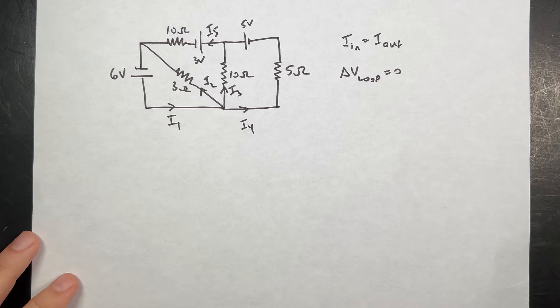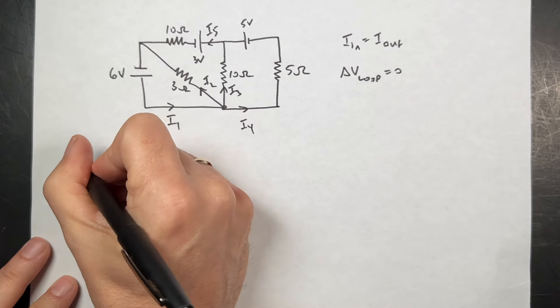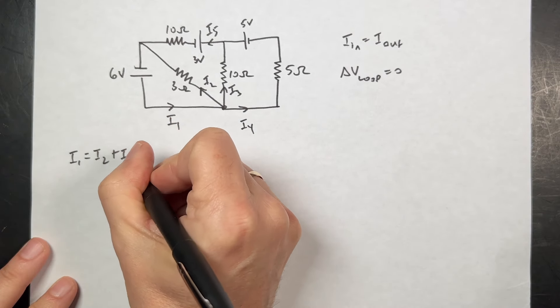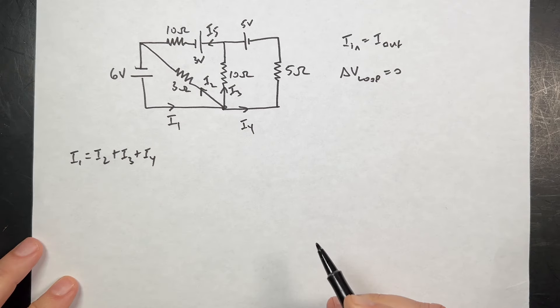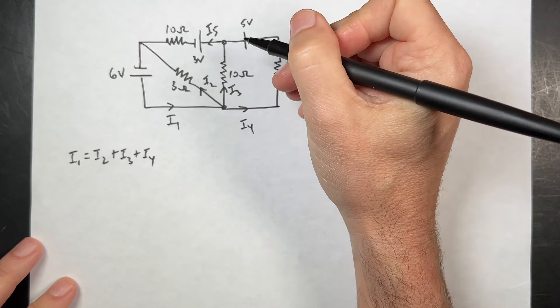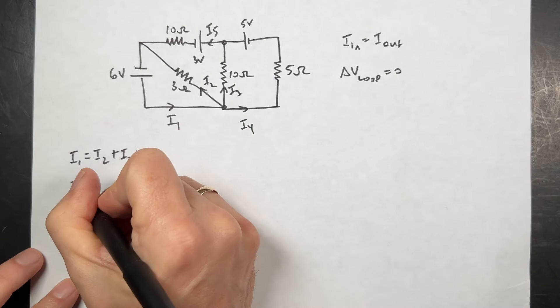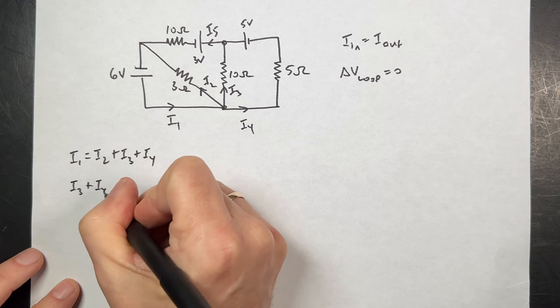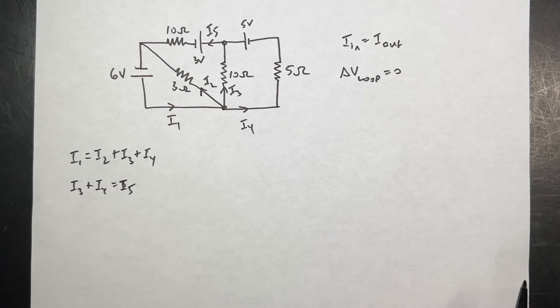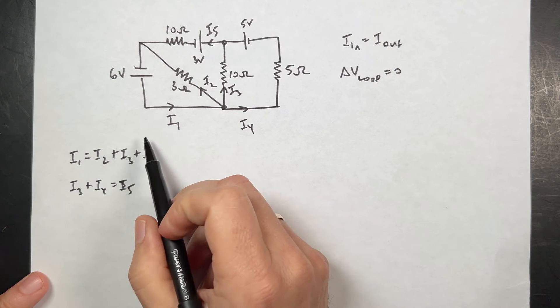With this, I actually have two junctions that I can write down. So I have this one right here. The current coming in, I get I1 equals I2 plus I3 plus I4. And then this junction up here says I3 plus I4 is equal to I5. You have to say it out loud or it doesn't work. Okay, so those are two junction rules.